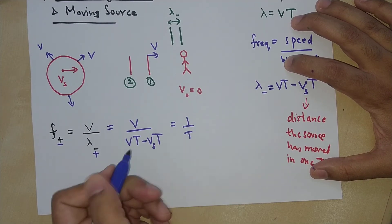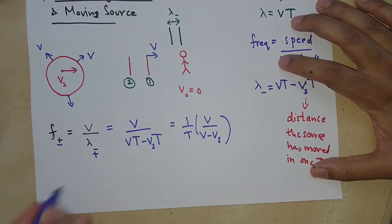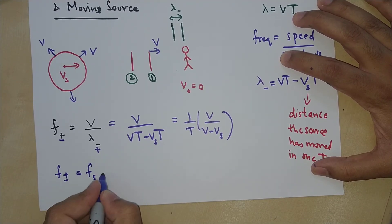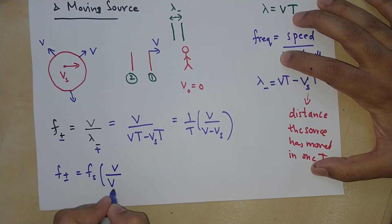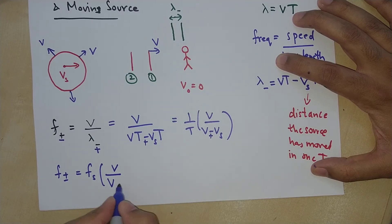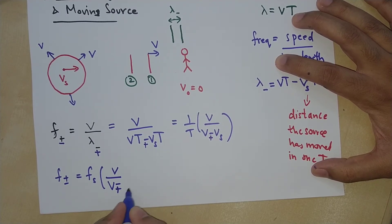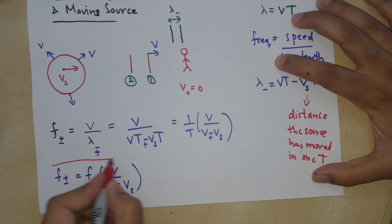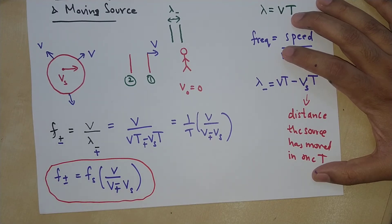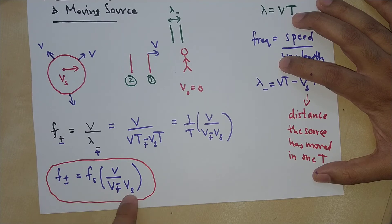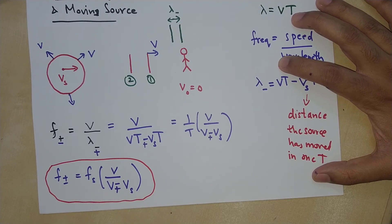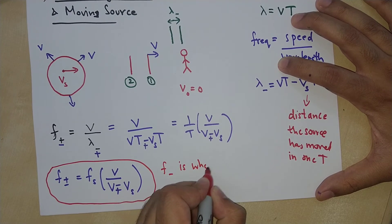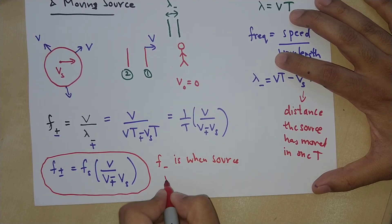Simplifying by taking 1 over T as a common factor, you get v over (v minus vs), and 1 over T is the frequency of the source. So the final equation is: f-observed equals f-source times v over (v minus vs). The plus sign in the denominator represents when the source is moving away. Notice that when this sign is plus, it corresponds to minus in the other convention.